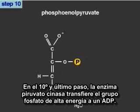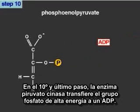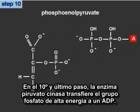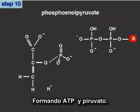In the 10th and last step of glycolysis, the enzyme pyruvate kinase transfers the high-energy phosphate group to ADP, forming ATP and pyruvate.